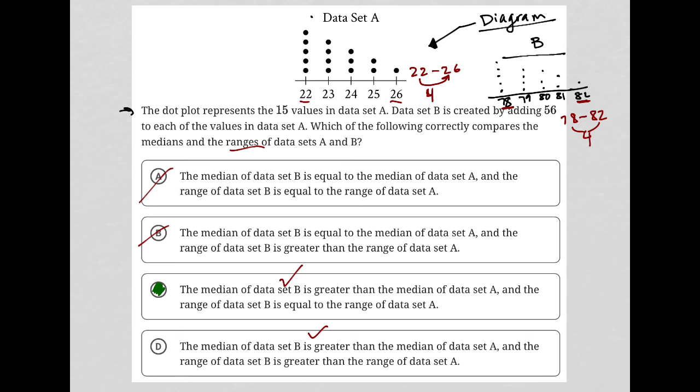Choice D says the range of data set B is greater than the range of data set A, which is not correct. So choice C is the best answer.